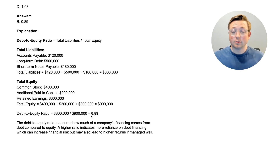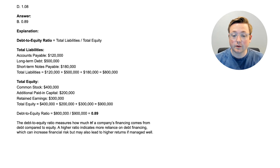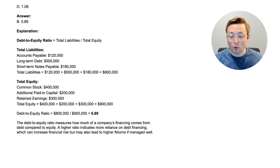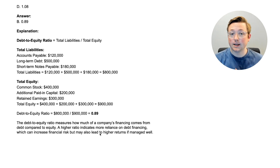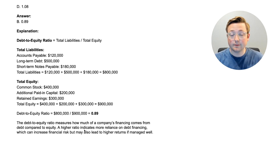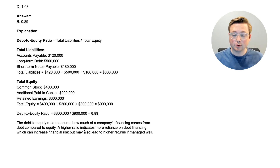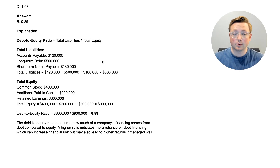What does the debt-to-equity ratio mean? It measures how much of a company's financing comes from debt compared to equity. A higher ratio indicates more reliance on debt financing, which can increase financial risk, but may also lead to higher returns if managed well. A lower ratio means you're using more equity financing. Debt-to-equity is really just total liabilities divided by total equity — a very simple ratio.